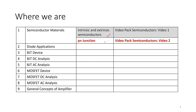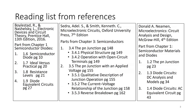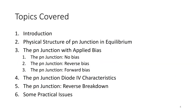Today we are looking at PN Junction. Topics covered for this video include: an introduction, the physical structure of the PN Junction in equilibrium, what happens with no bias, the effects of bias, a comparison of no bias to reverse bias and forward bias, the diode IV characteristics, reverse breakdown, and some practical issues before we enter diode applications in the next video.